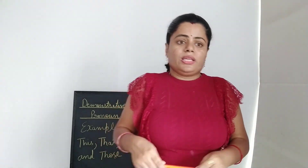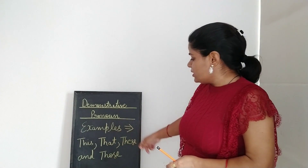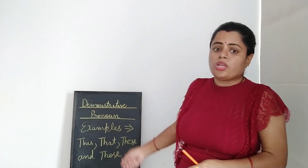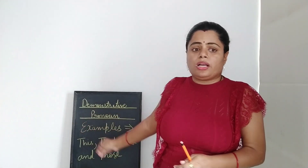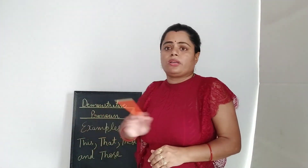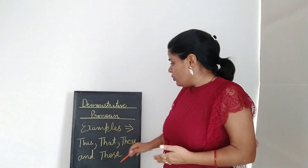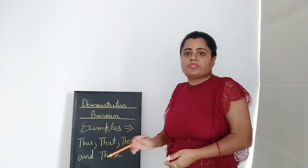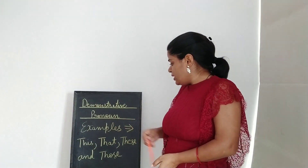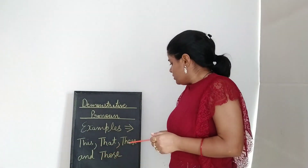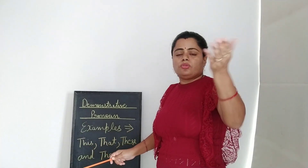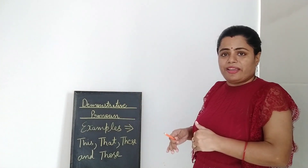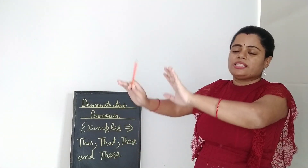When you make sentences using these 4 pronouns — this, that, these, those — please don't get confused. This and that are singular; these and those are plural. This and these are for nearby things; that and those are for far away things. These 4 words are all demonstrative pronouns.